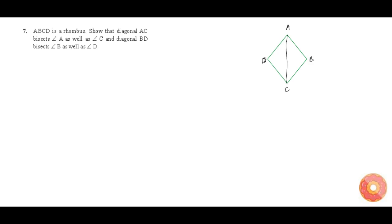Now, let us consider diagonal AC and diagonal BD, and let us consider their intersection point to be E. These are the conditions we know about the rhombus: in a rhombus, every side is equal, and it is a parallelogram with equal sides, and the diagonals bisect each other at 90 degrees.